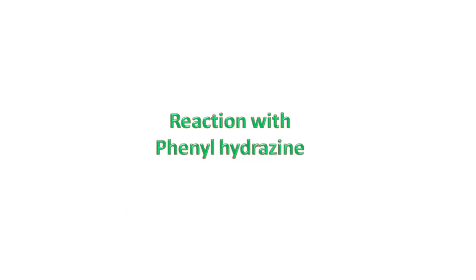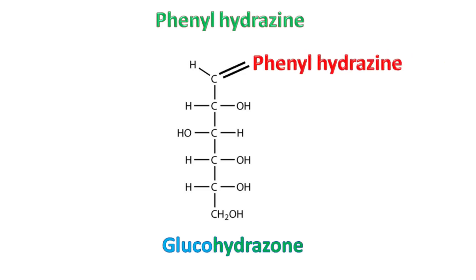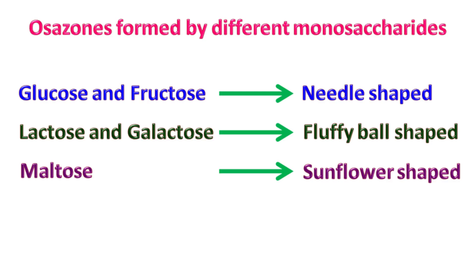Reactions with phenylhydrazine. Under acidic conditions, monosaccharides can react with phenylhydrazine to give osazones. The osazones formed by different monosaccharides have different crystal structures. For example, glucose and fructose give needle-shaped crystals, lactose and galactose give fluffy ball-shaped crystals, and maltose gives sunflower-shaped crystals.